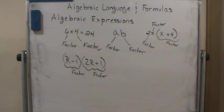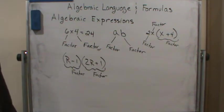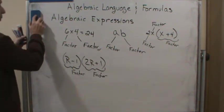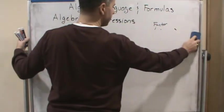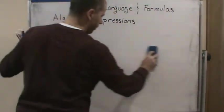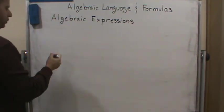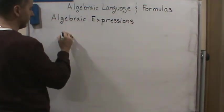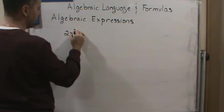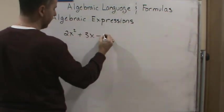Now, we can also look at the sum of differences within an algebraic expression. Okay? Now, when we're dealing with sum or differences, then we have other terms that we can use. Okay, so for example, if I'm looking at 2x squared plus 3x minus 4, so this is an algebraic expression.